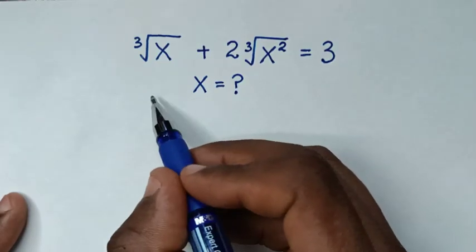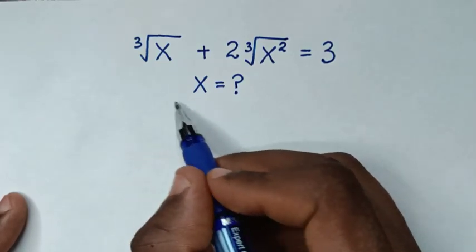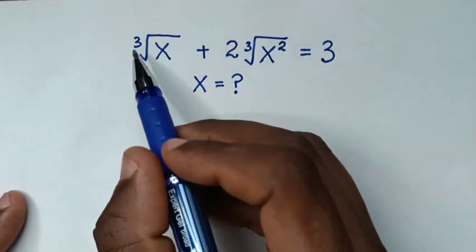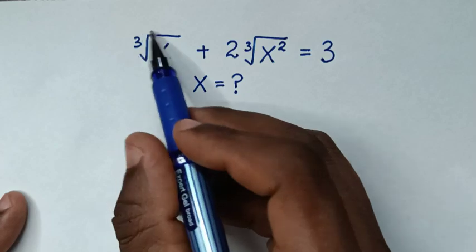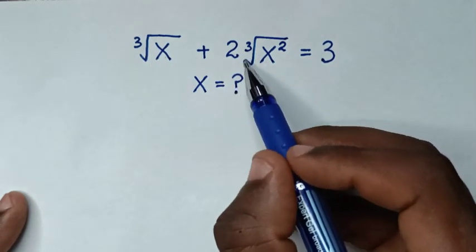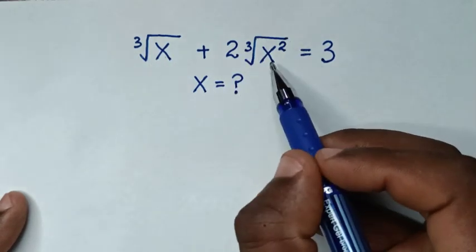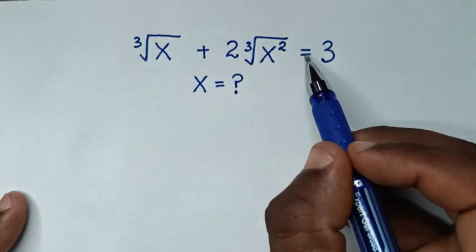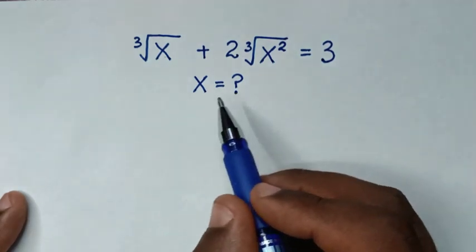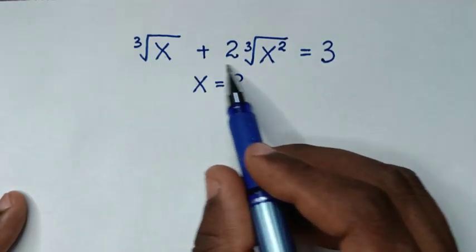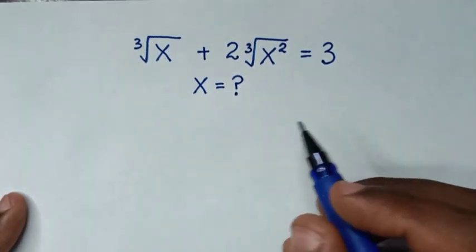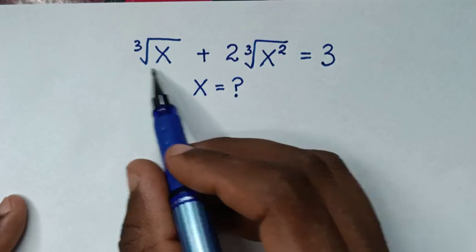Hello, you are welcome to solve this math problem, which is cube root of x plus 2 times cube root of x squared equals 3. We need to find the values of x from this equation.